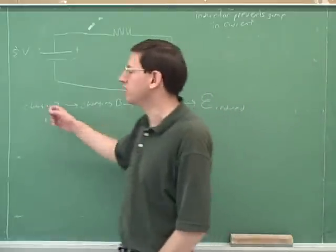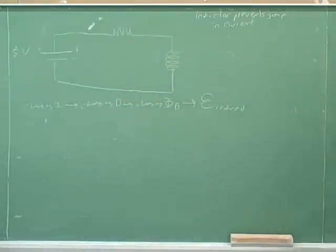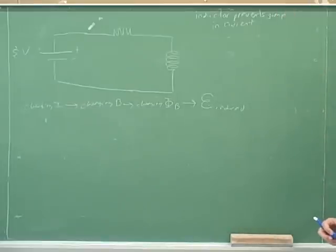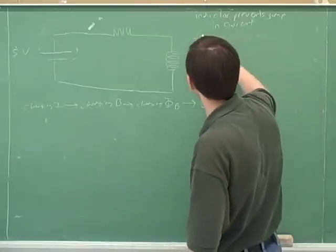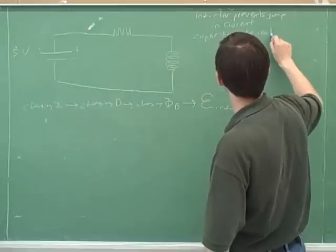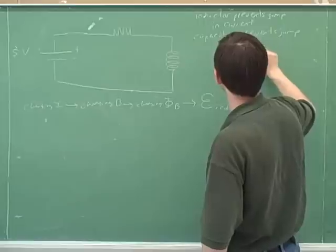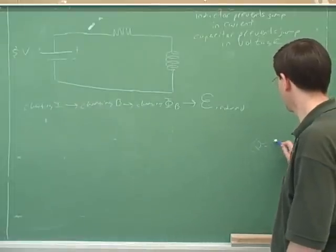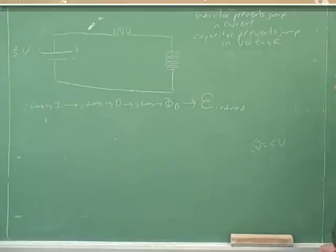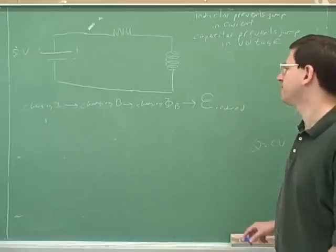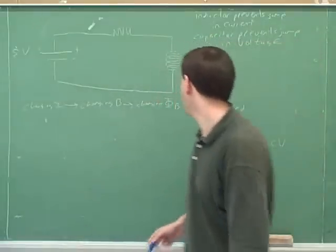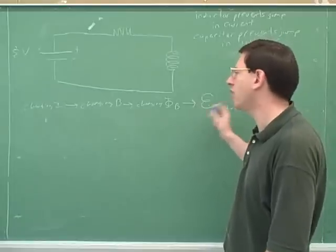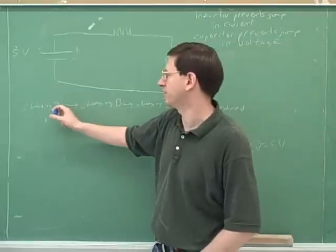It can't keep the current from changing at all, but it can keep it from jumping. How does that compare to a capacitor? A capacitor prevents jumps in voltage — that's the key difference between an inductor and a capacitor. How does the capacitor prevent the jump in voltage? It takes time for charges to accumulate that would allow the voltage to accumulate, so it can only change continuously. How does the inductor prevent the jump in current? A changing current is opposed by the induced voltage, which prevents it from jumping and forces it to change continuously.